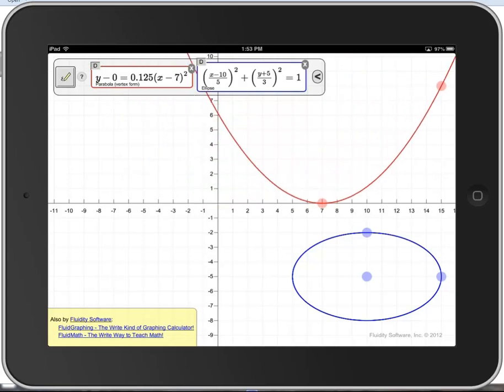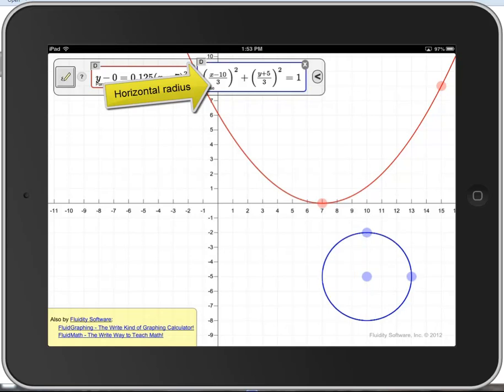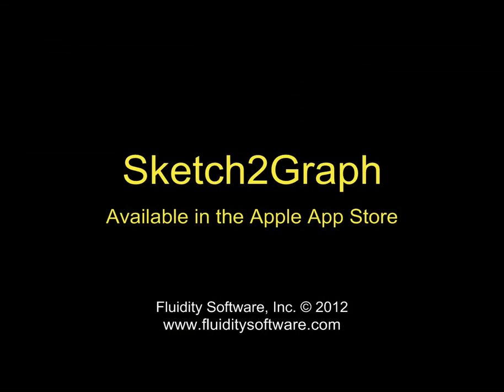And here I can see how changing the horizontal radius of an ellipse changes the math. These are just two examples. There's much more you can learn. We hope you'll enjoy learning with Sketch to Graph.